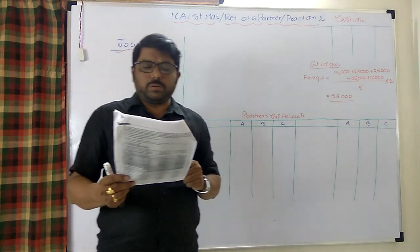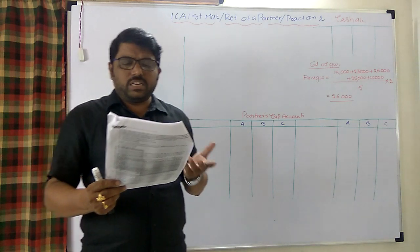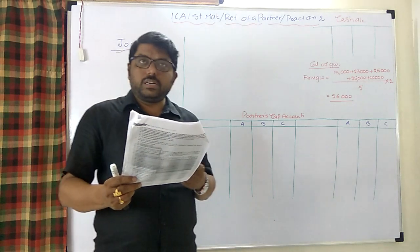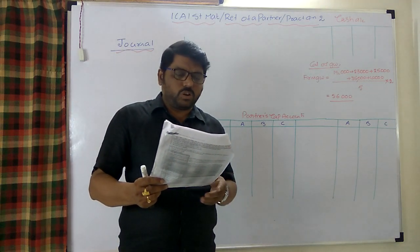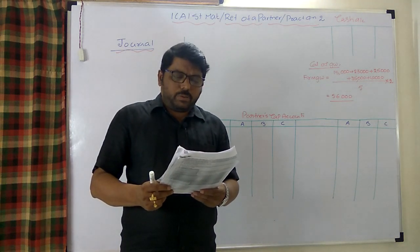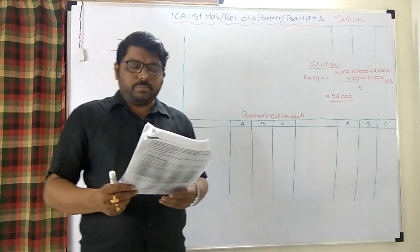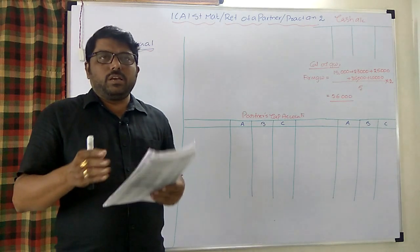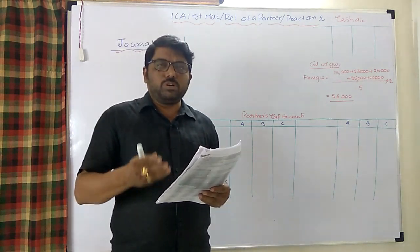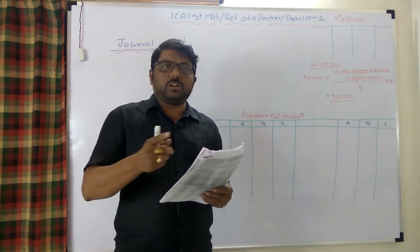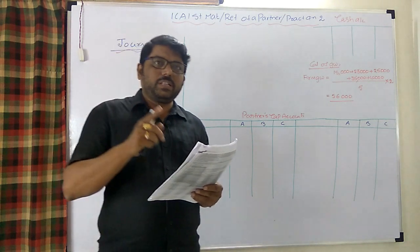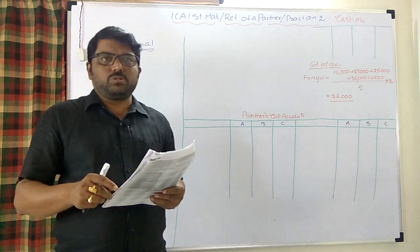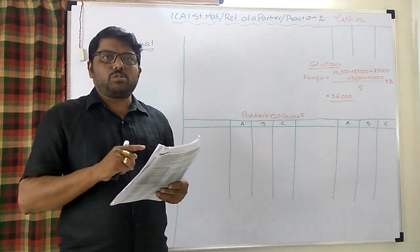The two assets revalued are fixtures (increase of 9,800) and provision for bad debts (anticipated loss of 1,800). Remaining assets are at book value. The amount payable to A shall be paid by B. Therefore, the entry is A's capital account debit to B's capital account, making B a creditor for that amount.